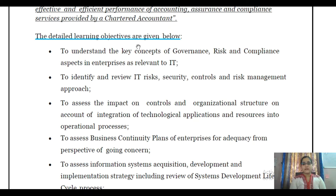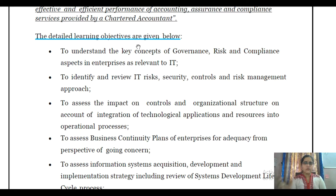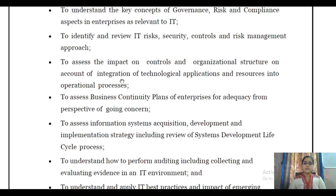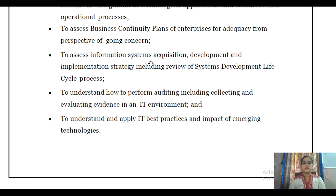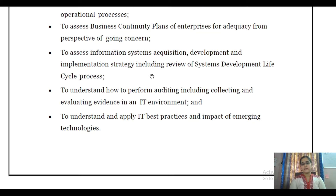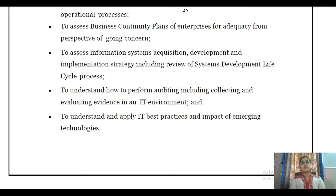Then, to assess business continuity plans of an enterprise for adequacy from the perspective of going concern — this is chapter number four, business continuity planning and disaster recovery planning. We will be seeing how they formulate a plan and whether the plan is sufficient for making the enterprise survive in a highly dangerous situation or any uncertain event, and what steps are being taken. Then, to assess information acquisition, development, and implementation strategy, including review of the system development life cycle — this is chapter number five. Here we will see how to develop and acquire a system, because without understanding, we cannot go to the audit place and just rely on what those people are providing us. If we have knowledge, we can check those documents.